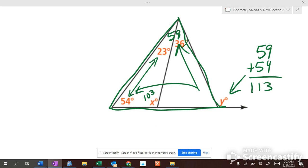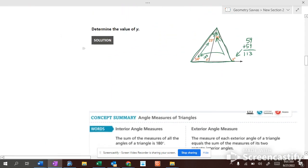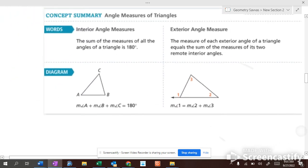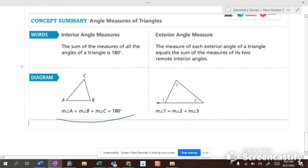So, angle y must be 113. Exterior angle, interior angle. Sums of triangles. This is pretty basic. Interior angles of triangles add up to one [180].